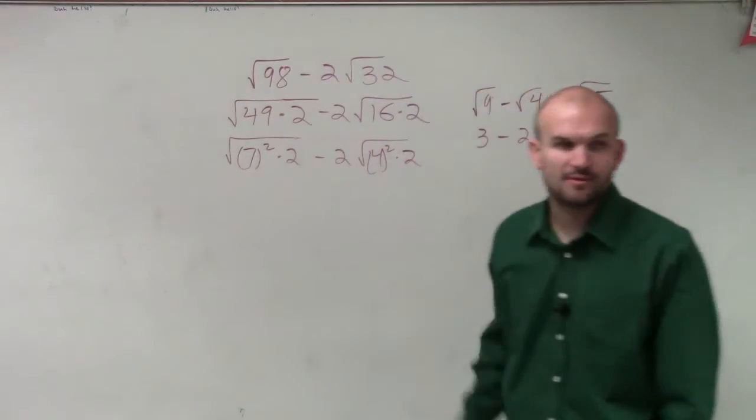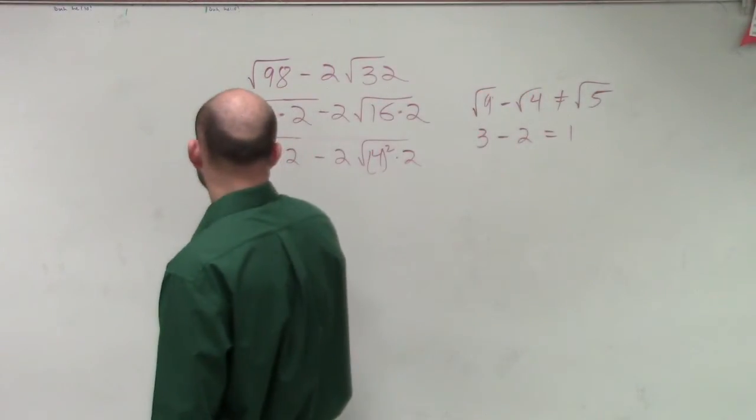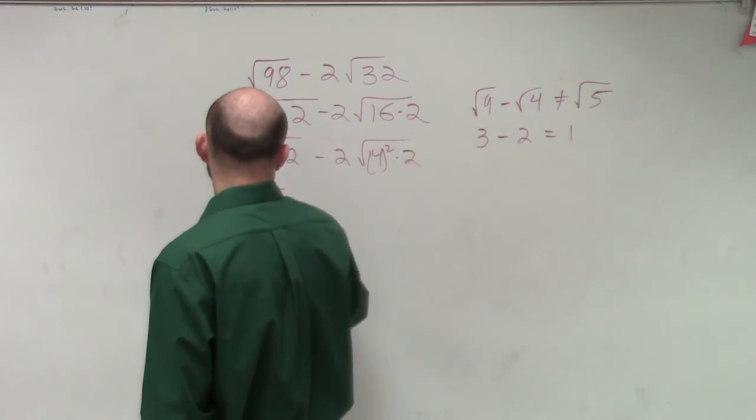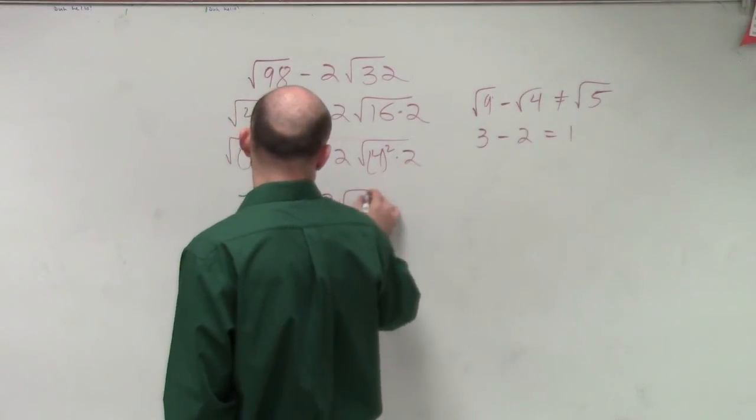Well, obviously, now we can break this up. So this is going to be 7 times the square root of 2 minus 2 times the square root of 2.